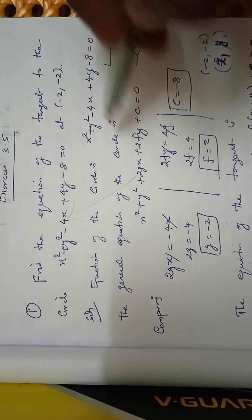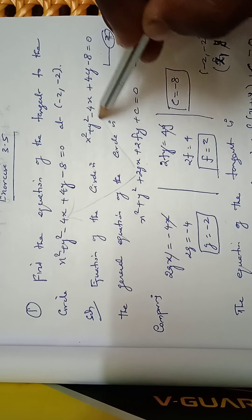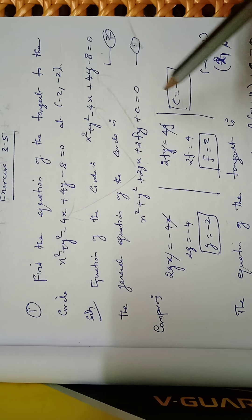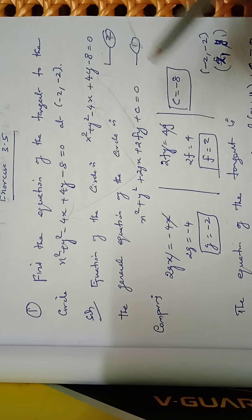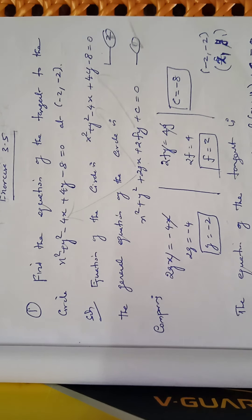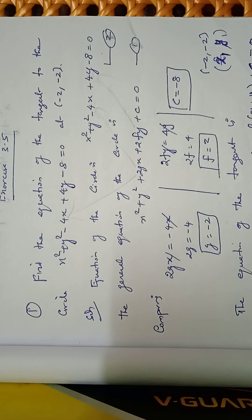Also comparing: 2f = 4, so f = 2. Wait — f = −2. The formula for the equation of the tangent is xx1 + yy1 + g(x + x1) + f(y + y1) + c = 0.